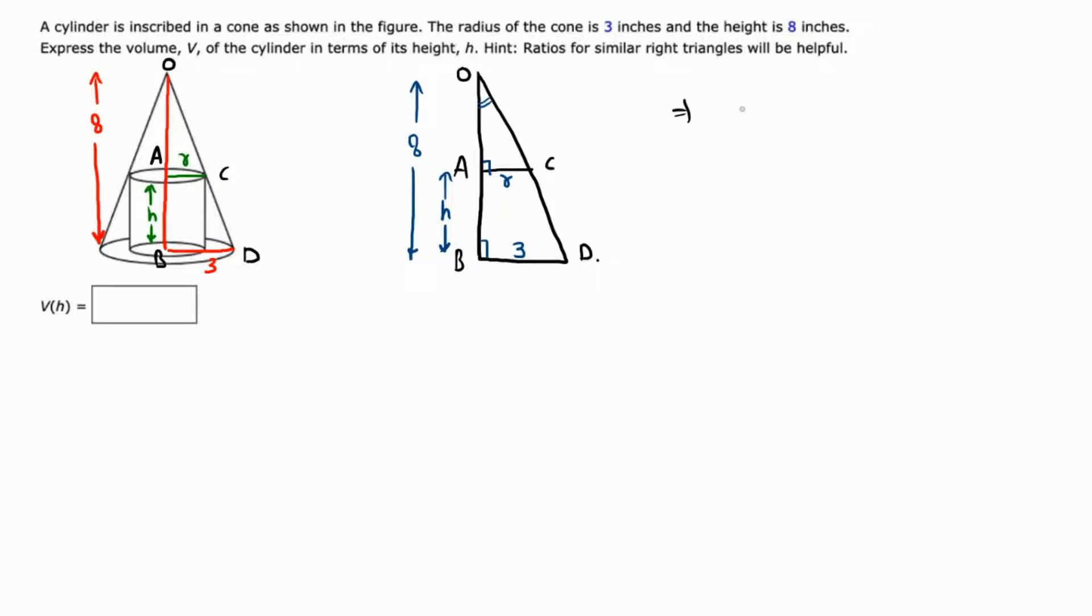This implies that triangle OAC is similar to triangle OBD by AA similarity. If they are similar, then the ratio of corresponding sides must be equal.